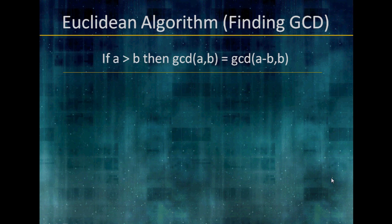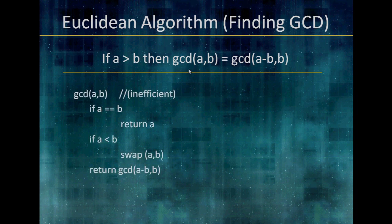The Euclidean algorithm is the way that we're going to find the GCD. Euclid said that if A is greater than B, then the GCD of A and B equals the GCD of A minus B and B. Here is pseudocode which represents this equation. Note that this is the inefficient version, don't implement this. We have a function GCD that takes in two values, A and B. If A equals B, we return A. If A is less than B, we swap the two values, and then from there we return GCD of A minus B and B.